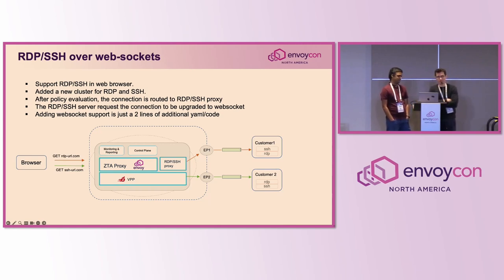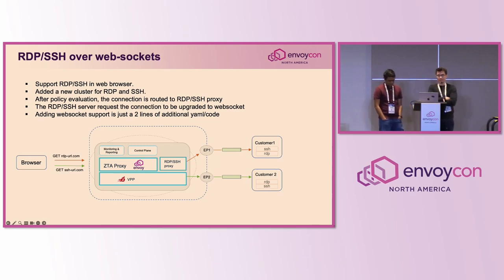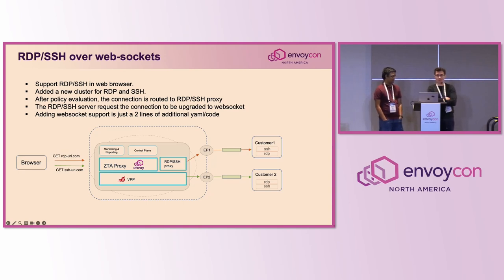Question: in a multi-tenanted proxy, how do you handle backends with overlapping IP addresses? The proxy itself is network multi-tenanted as well — that's part of the reason we run everything on top of VPP.